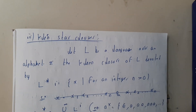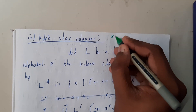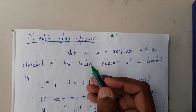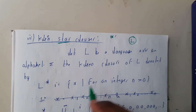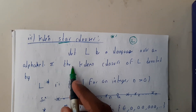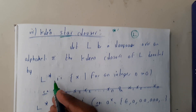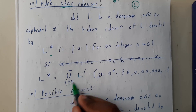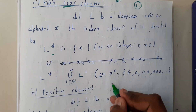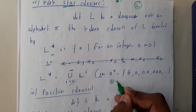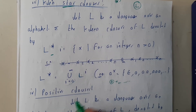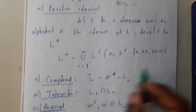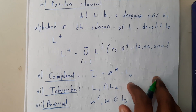Next is Kleene closure, also called Kleene star closure — the symbol is star (*). Here there is no need for two languages; you can manage with a single language. Let L be a language over an alphabet sigma. The Kleene closure, denoted L*, covers all combinations from zero to infinity. Remember, Kleene closure starts from zero — zero or many. Positive closure starts from one to infinity.